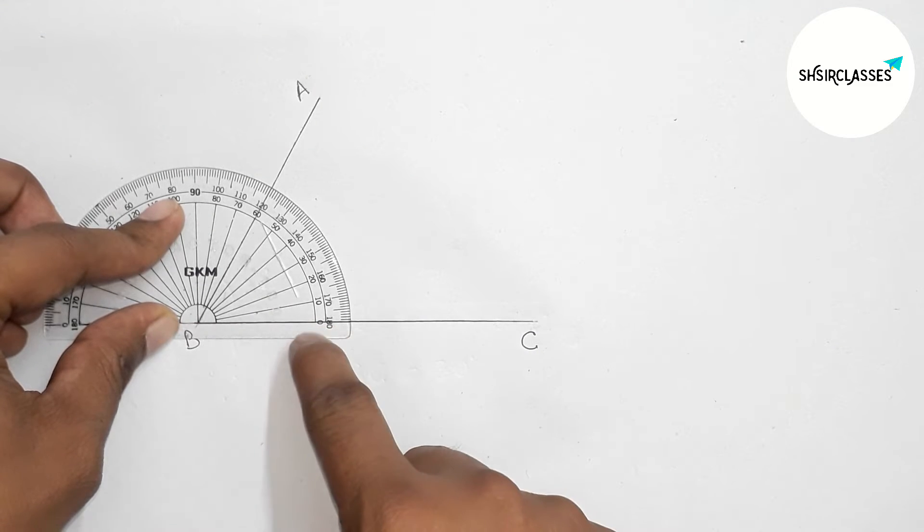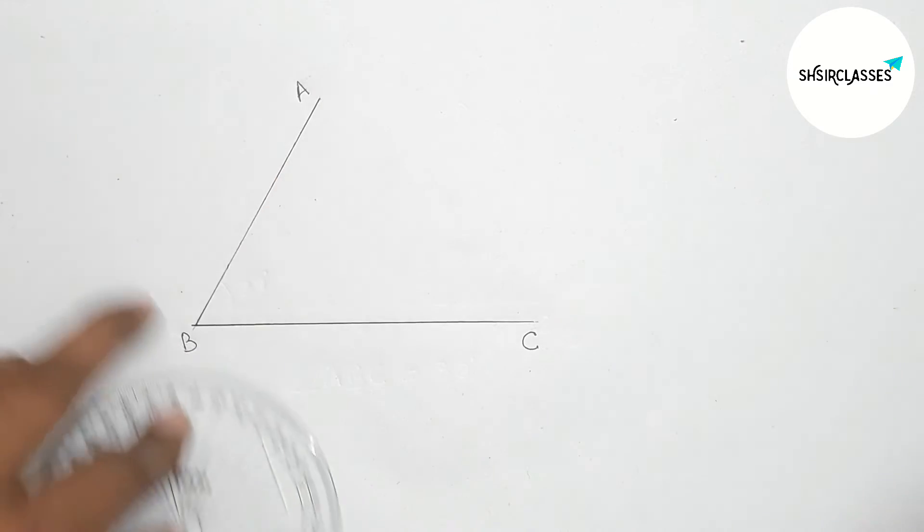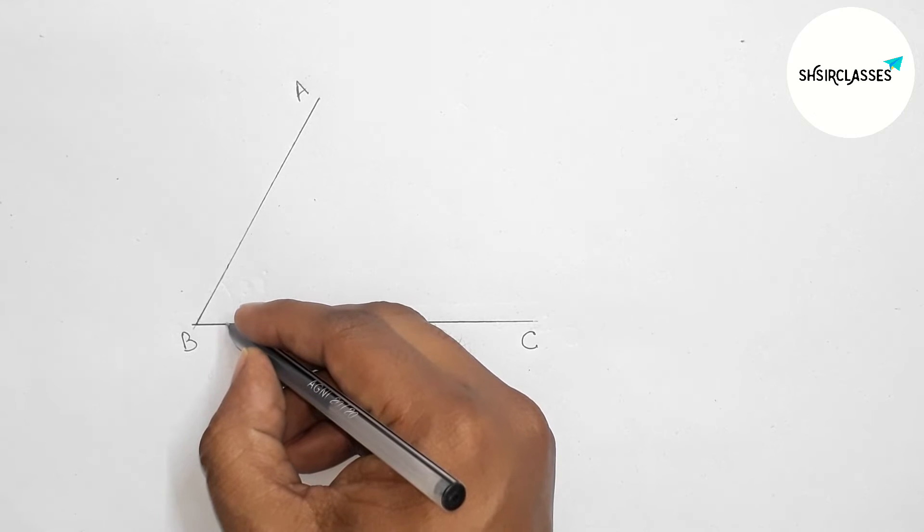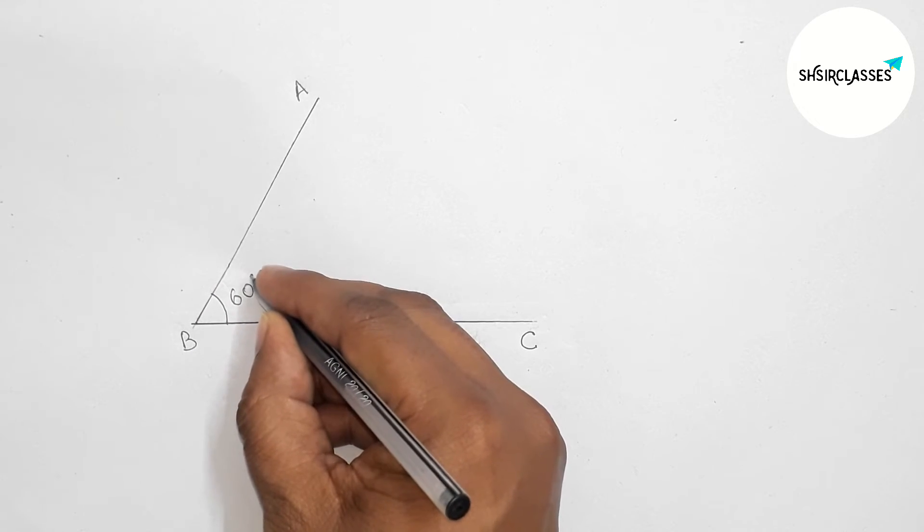So here this is perfectly a 60 degree angle. So angle ABC. So marking here this is 60 degree angle.